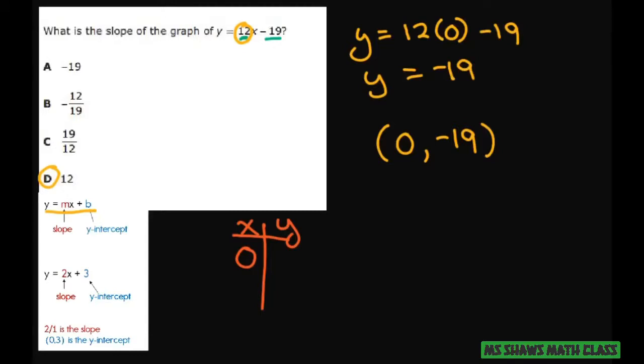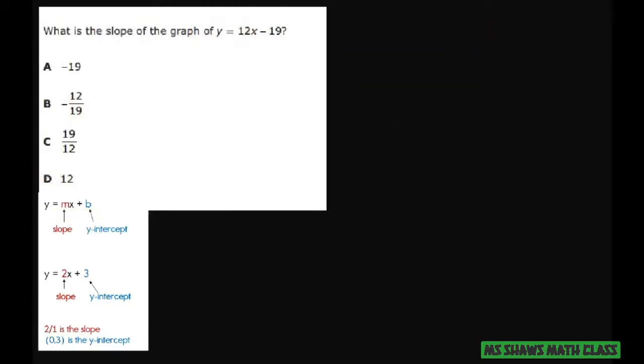Now let's look at what these other answers would regard. Let's say they ask for the x-intercept. The x-intercept is when y is 0. So if y is 0, we have by substitution,